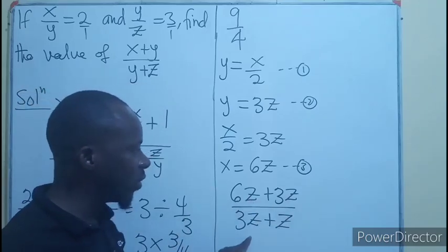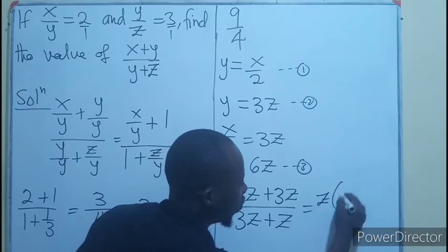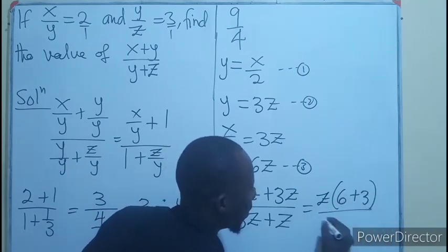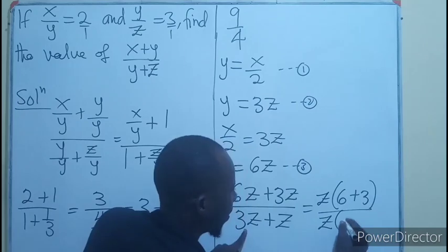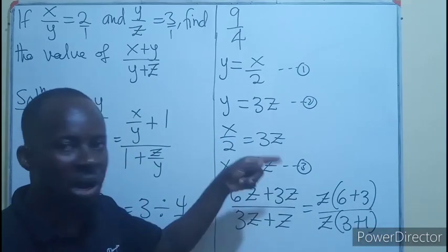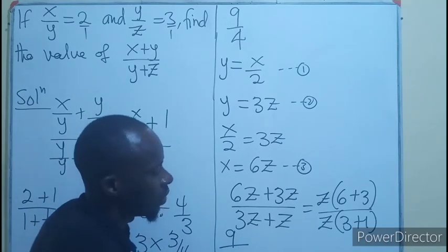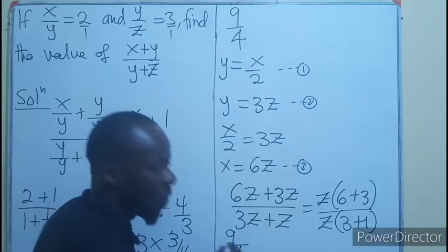You can factorize. So we're having z into bracket 6 plus 3, divided by z into bracket 3 plus 1. And in this case, we know that z will cancel. So 6 plus 3 will be 9, and 3 plus 1 will be 4.